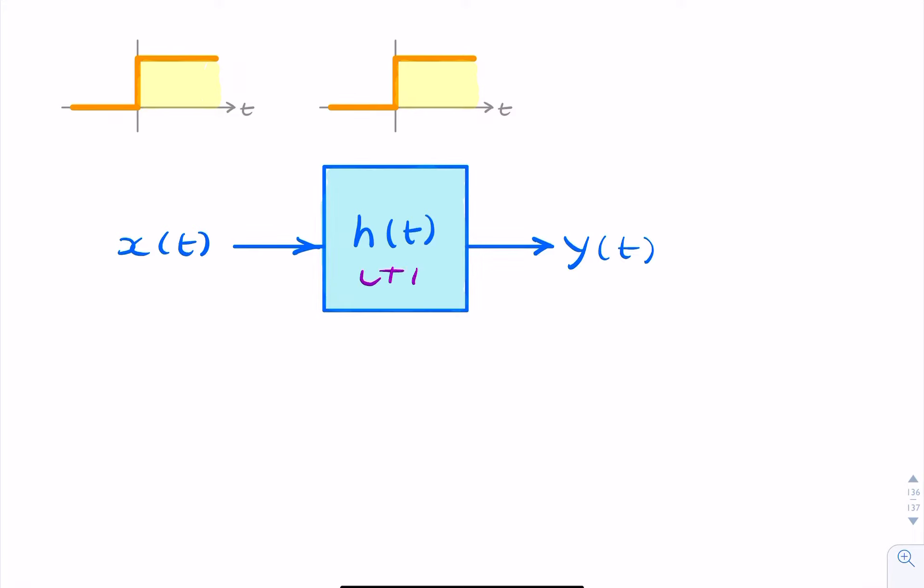If we have an LTI system with an input in the form of a unit step and an impulse response in the form of a unit step, how do we find the output?